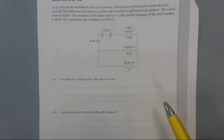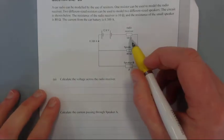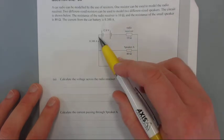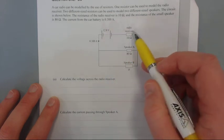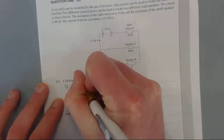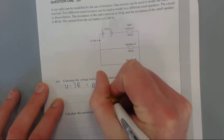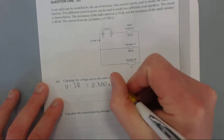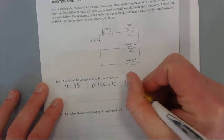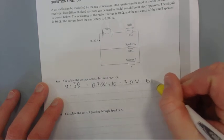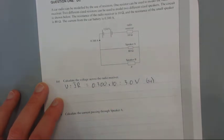Part A: Calculate the voltage across the radio receiver. We've got its resistance and we know the current is 0.3 amps because the current in equals the current coming out of the battery. So we have V equals IR, which equals 0.3 amps times 10 ohms, which equals 3.0 volts. I'll put 2 significant figures because the 10 ohms had two significant figures.